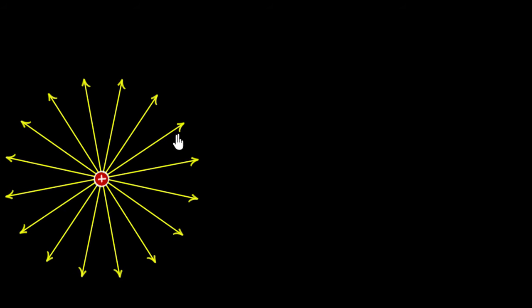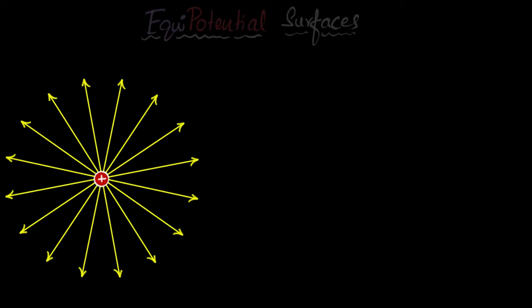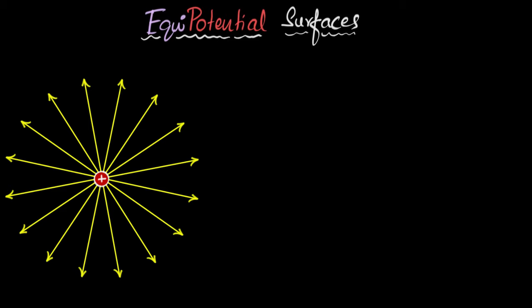We've learned how to visualize electric fields by drawing field lines. In this video, let's explore how to visualize electric potentials. One way of doing that is by drawing something called equipotential surfaces.